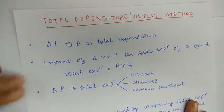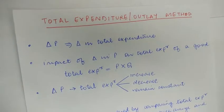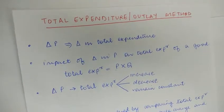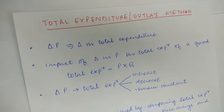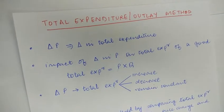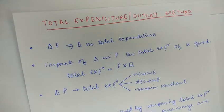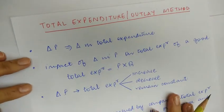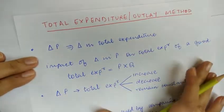In this lecture, we will cover the total expenditure method of measuring elasticity of demand. In the previous lecture, I covered the proportionate method of measuring elasticity of demand. In case you need to see that video, I will provide the link in the description box. Now let's move on to the total expenditure method, also called the total outlay method, of measuring the elasticity of demand.